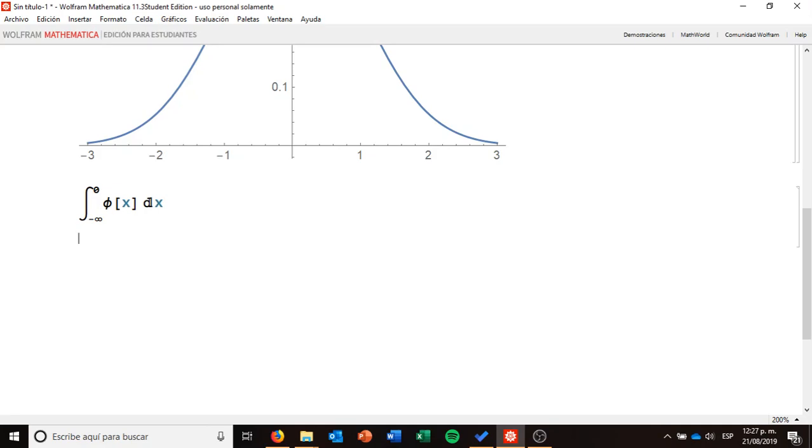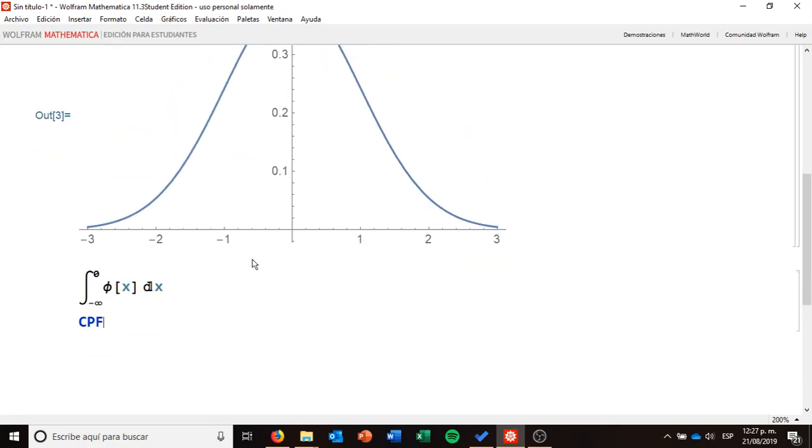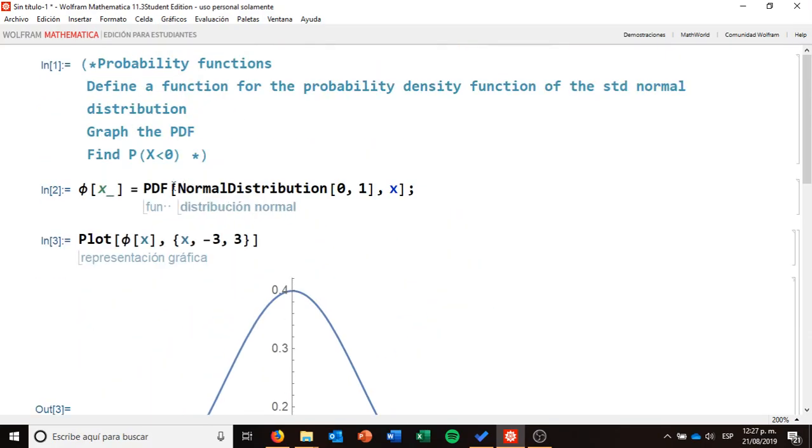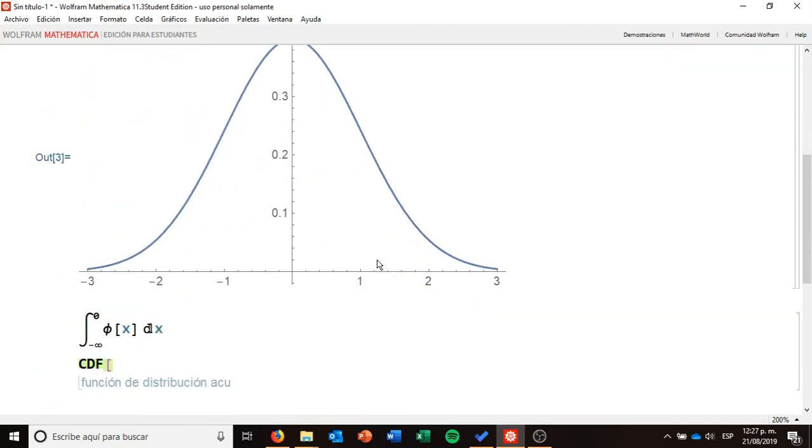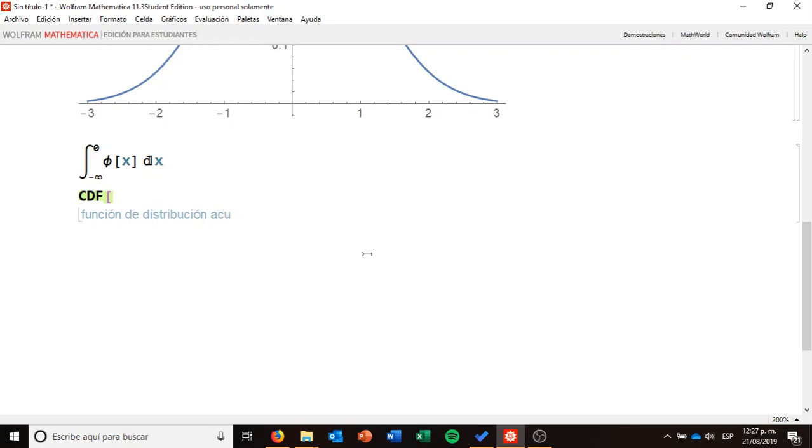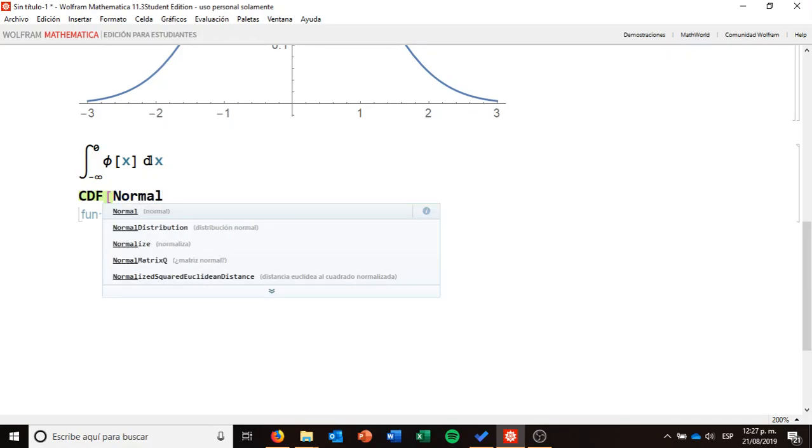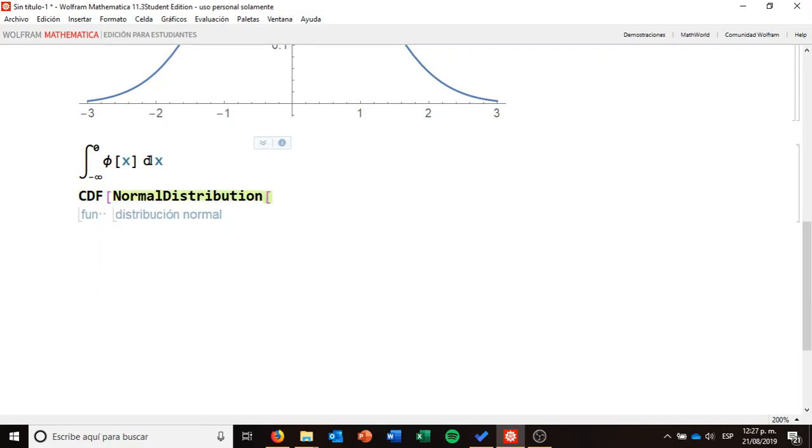And as well, I'm going to use another function that is called the cumulative probability, I'm sorry, the cumulative distribution function. And in this cumulative distribution function, I just need to specify as well as in this one, remember that it was PDF, then the kind of distribution, the parameters, and then the x that I am looking for. What I'm going to use is the same idea, the normal distribution, I'm just going to select it from here, here it is, with parameters zero one.